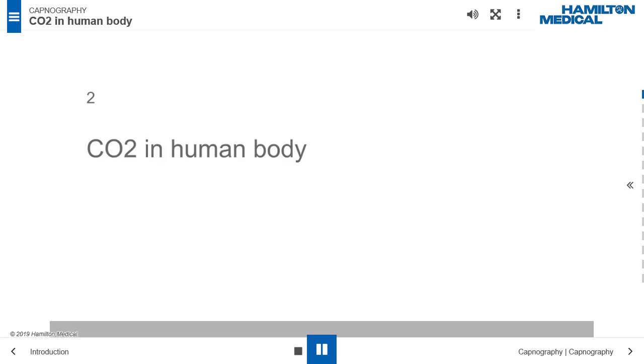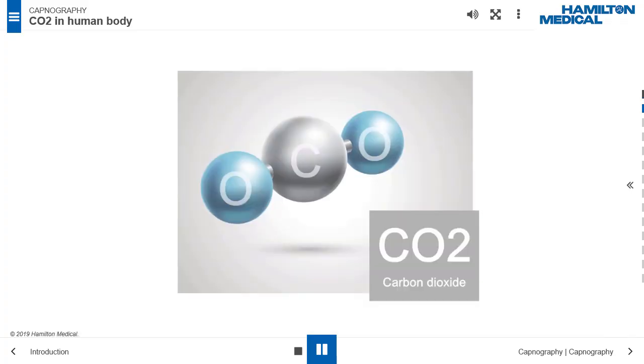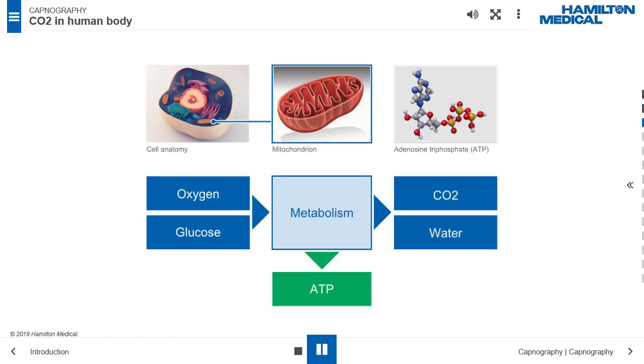CO2 in Human Body. Carbon dioxide, CO2, is a colorless gas with a concentration in the air of about 0.04% by volume. All living cells in the human body require energy to survive and carry out their physiological functions. The energy is generated by the metabolic process in the mitochondria of cells.